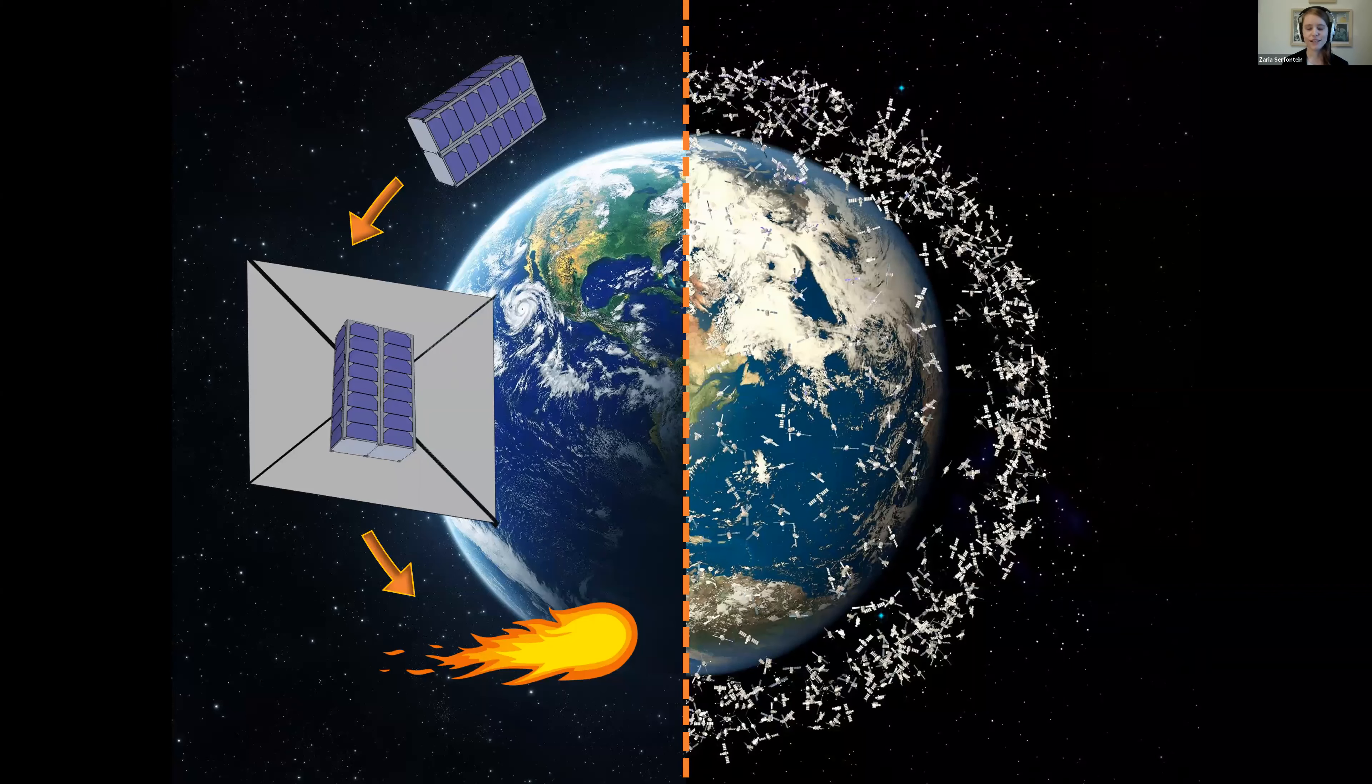One way to achieve this is through drag sails, which you can see in the slide here. These sails are attached to the satellite before launch and remain stowed throughout the satellite's lifetime. Once the satellite has completed its mission, the sail deploys, increasing both the area and the drag of the satellite, allowing it to re-enter and burn up in the atmosphere.